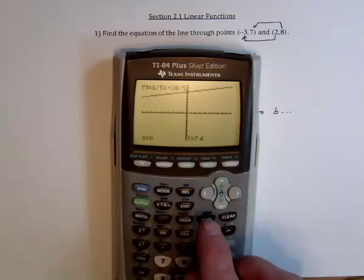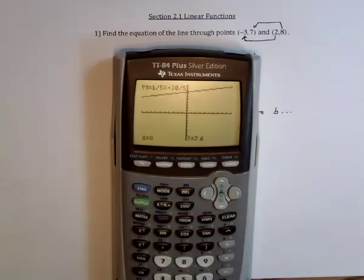So go to trace. And I can now type in negative 3 for that first point. And if I did this right, it's going to tell me that the y value is 7. Perfect. That one is right.